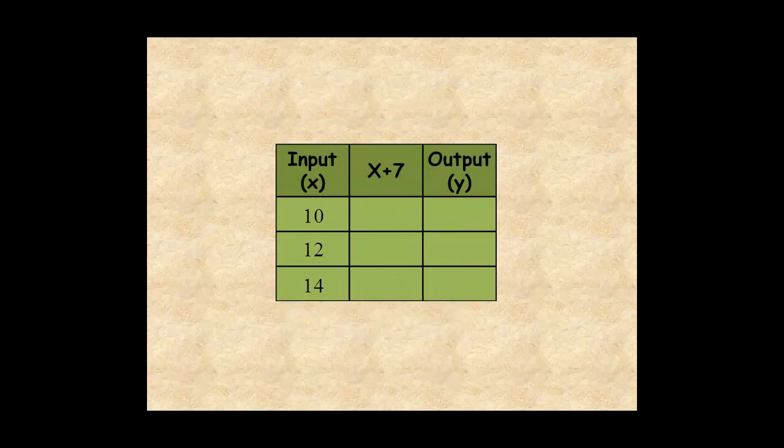Here's an example of a function table with the rule x plus 7. So for an input of 10, the output is 17. For an input of 12, the output is 19. And for an input of 14, the output is 21.